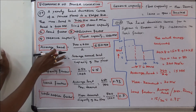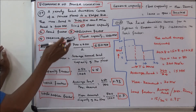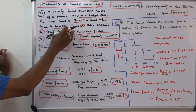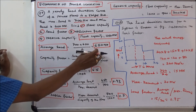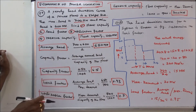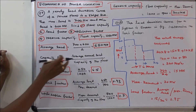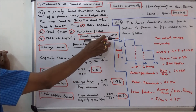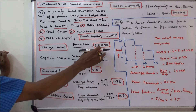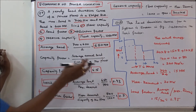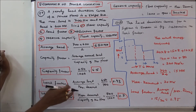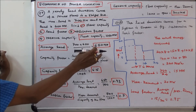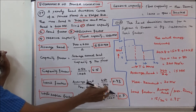First, calculate the average load: average load equals (maximum load plus minimum load) divided by 2, that is (700 plus 600) divided by 2, equals 650 megawatts. Capacity factor equals average annual load divided by plant capacity: 650 divided by 1000 equals 0.65. Load factor equals average load divided by maximum demand: 650 divided by 700 equals 0.93.